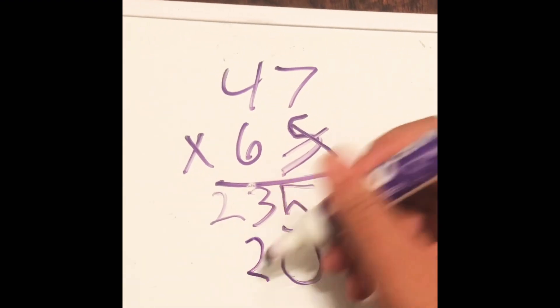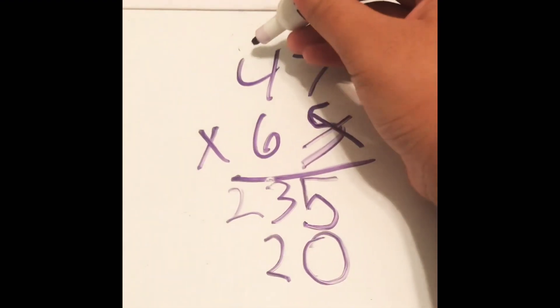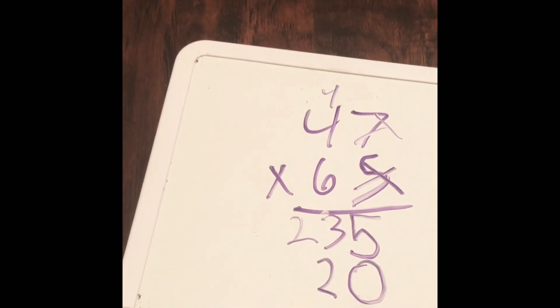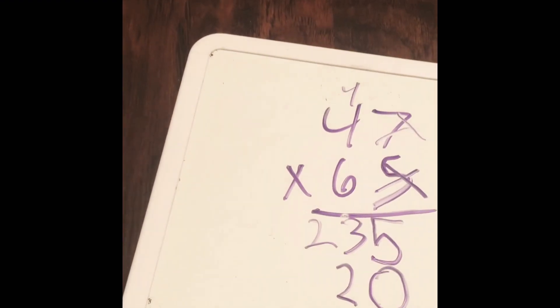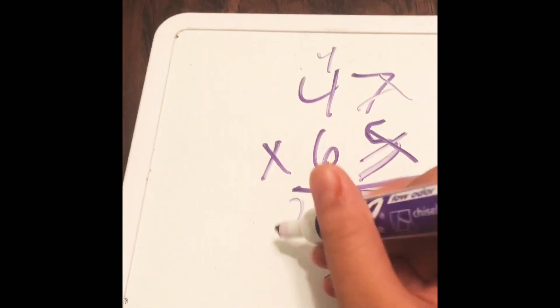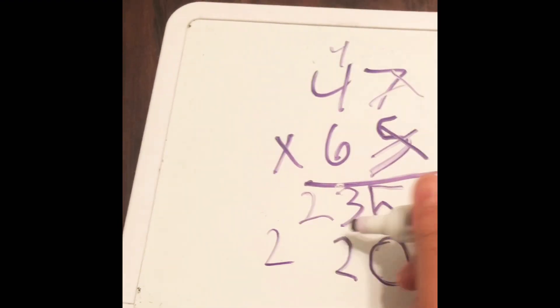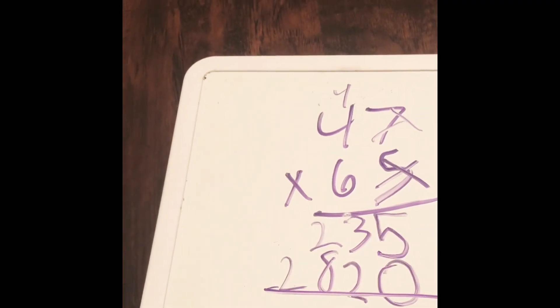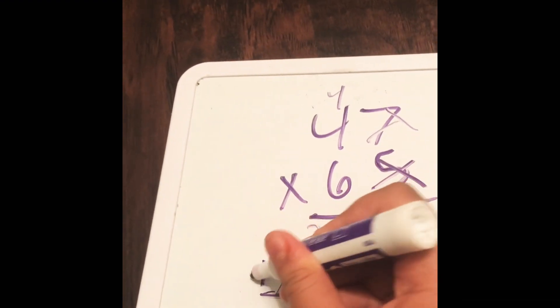So we're gonna put the two here and the four here. And four times six equals 24, 24 plus four equals 28. So we're gonna put two here and then eight here. And then we have to add them.